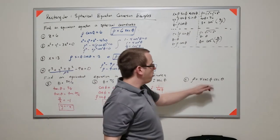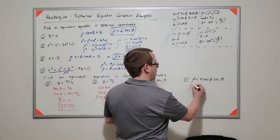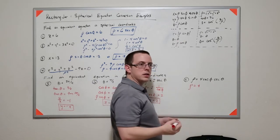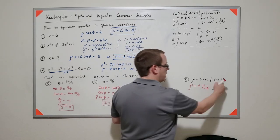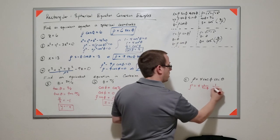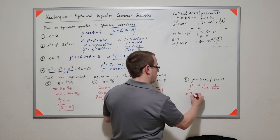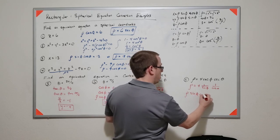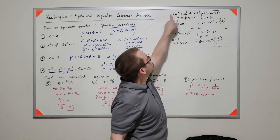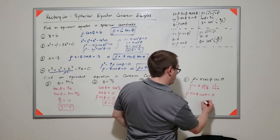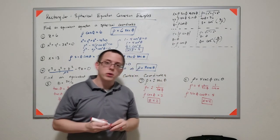Finally, ρ equals 4 cosecant φ secant θ. Cosecant is the reciprocal of sine and secant is the reciprocal of cosine, so rearranging gives ρ sine φ cosine θ equals 4. Since ρ sine φ cosine θ is just x, this is simply x equals 4. And those are equivalent equations.